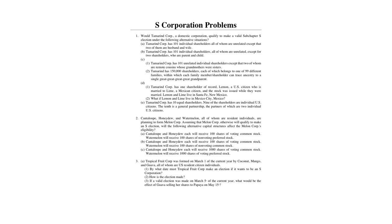In situation A, Tamron Corporation has 101 individual shareholders, all of whom are unrelated except two of them are husband and wife. This gets at the requirement that to be an S-corporation, the number of shareholders must be equal to or less than 100. When looking at this rule, you're allowed to attribute family members as one specific shareholder. Spouses are always considered one shareholder, so the 101 shareholders — counting the husband and wife as one — gives us 100. We are within the requirement.